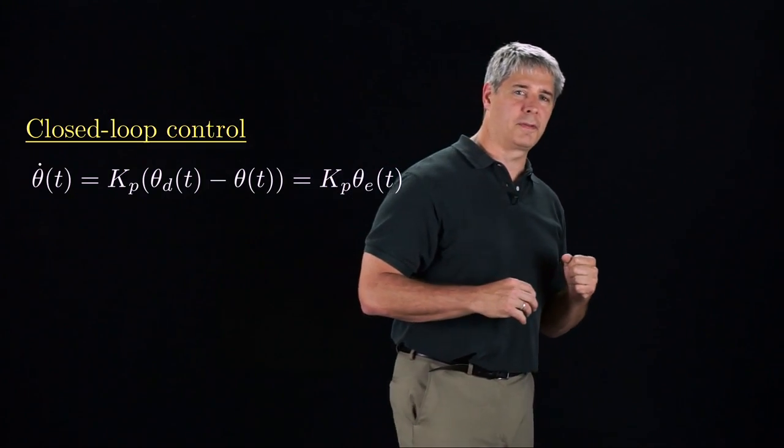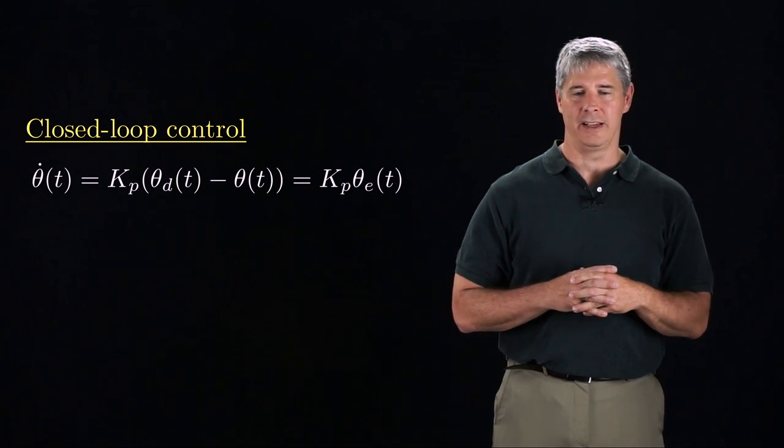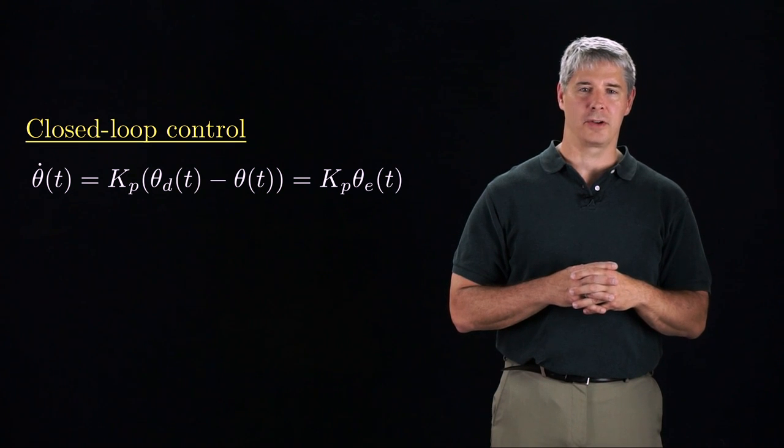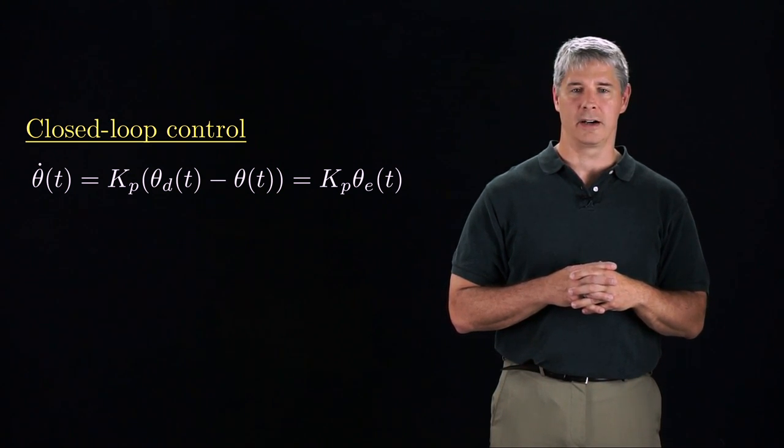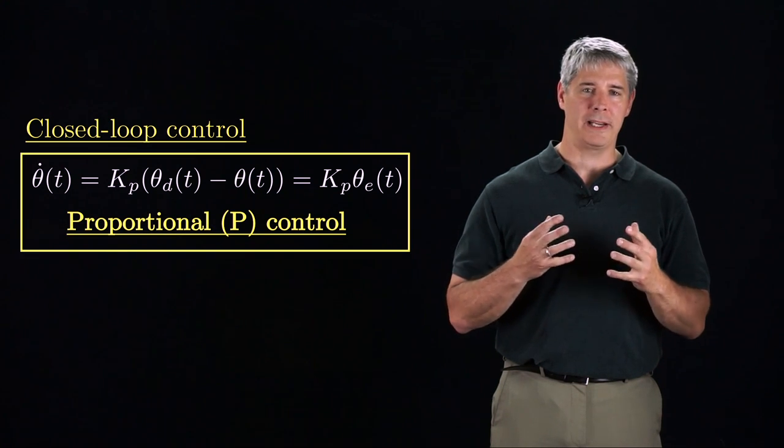Essentially, all robot controllers employ feedback, and the simplest closed-loop controller commands a joint velocity equal to a gain kp times the error theta e. The gain kp is called a proportional gain, since the control theta dot is proportional to the error. This type of control is called proportional control, or P control for short.